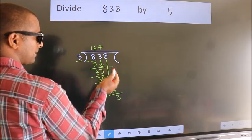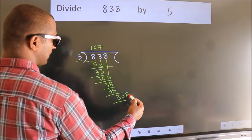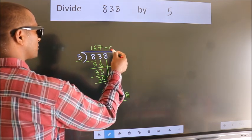No more numbers to bring down. So we stop here. This is our remainder. This is our quotient.